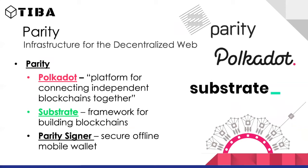Parity is building infrastructure for a decentralized web with three main products. Polkadot is a platform for connecting independent blockchains — it allows different blockchains to talk to each other, which is valuable since many blockchains currently cannot communicate. Substrate is a framework for building your own blockchains. They also have their own mobile wallet available on both iOS and Android.